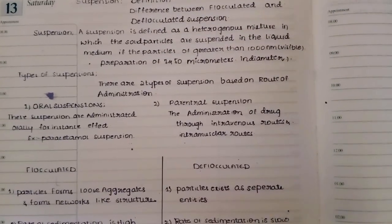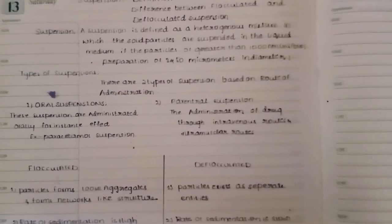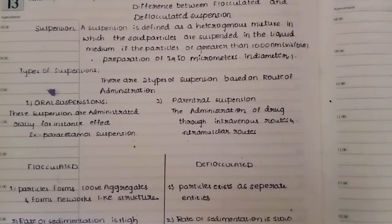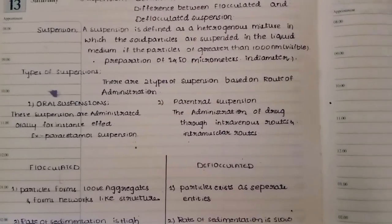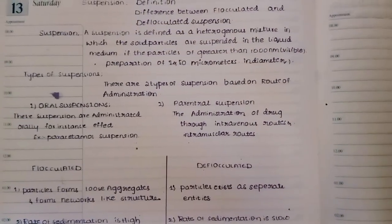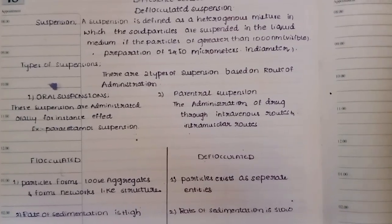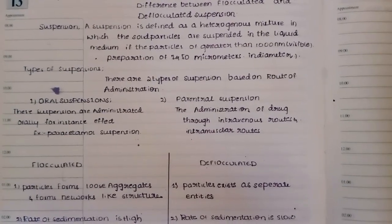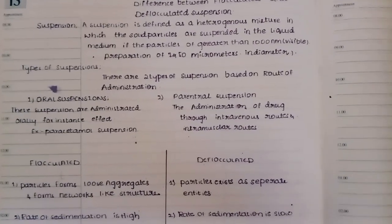Generally, suspension and emulsion — these are nothing but biphasic liquid dosage forms. There are two phases, whether it may be liquid or solid. There is suspension, and there is water, oil phase and aqueous phase — there is emulsion. Suspension is defined as a heterogeneous mixture in which the solid particles are suspended in the liquid medium.